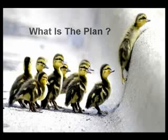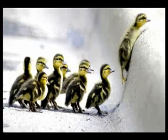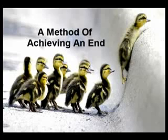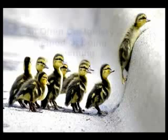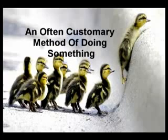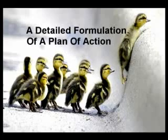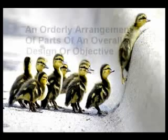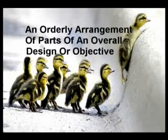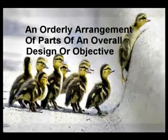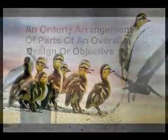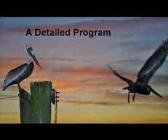Here's the dictionary definition. Number one: a method of achieving an end. Definition two: an often customary method of doing something. Definition three: a detailed formulation of a program of action. Four: an orderly arrangement of parts of an overall design or objective. And definition five: a detailed program.